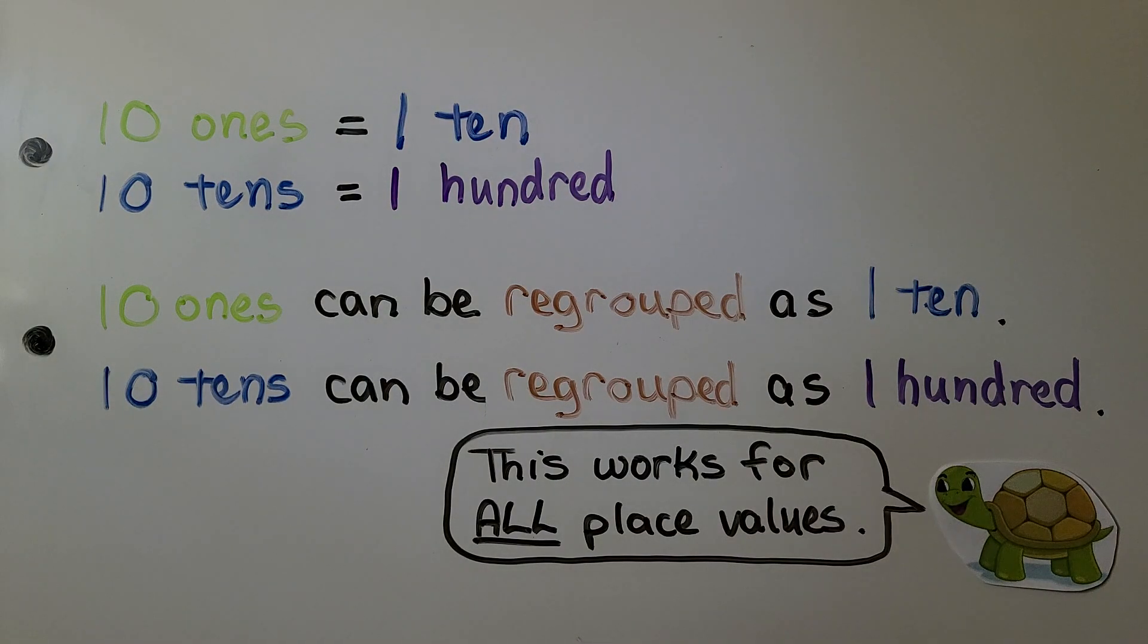Ten tens equals one hundred. Ten ones equal one ten. Ten tens equal one hundred. So ten ones can be regrouped as one ten. Ten tens can be regrouped as one hundred. This works for all place values. If we have ten hundreds, we could regroup it as one thousand.